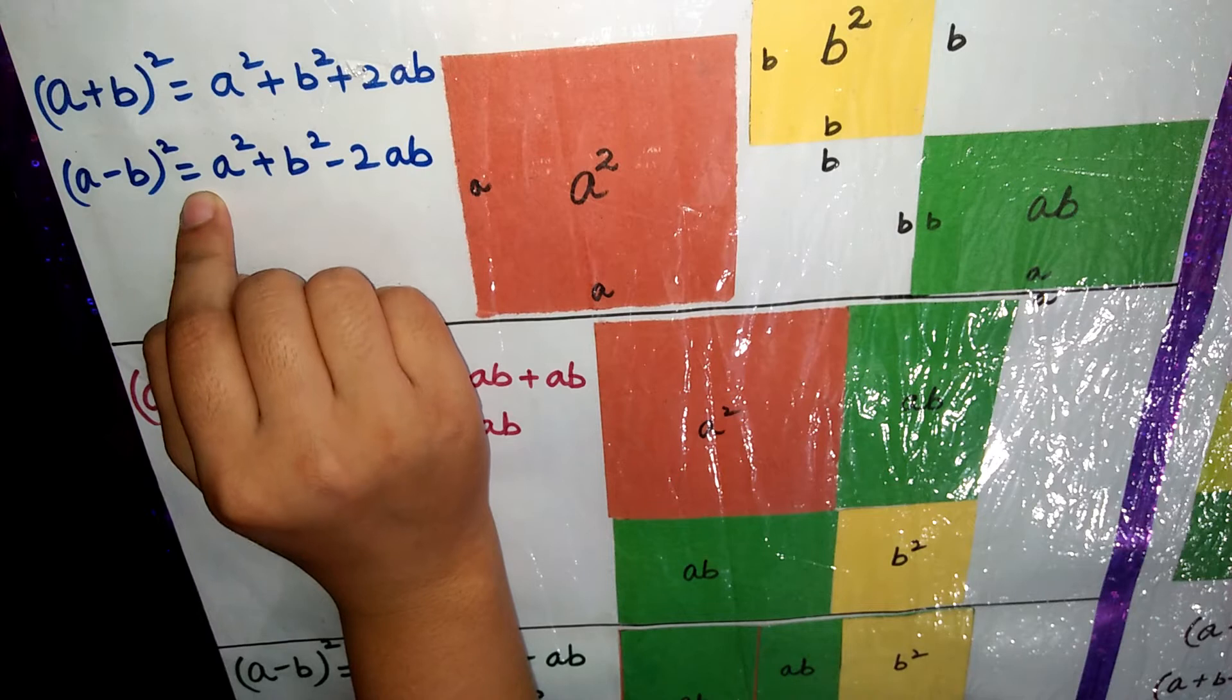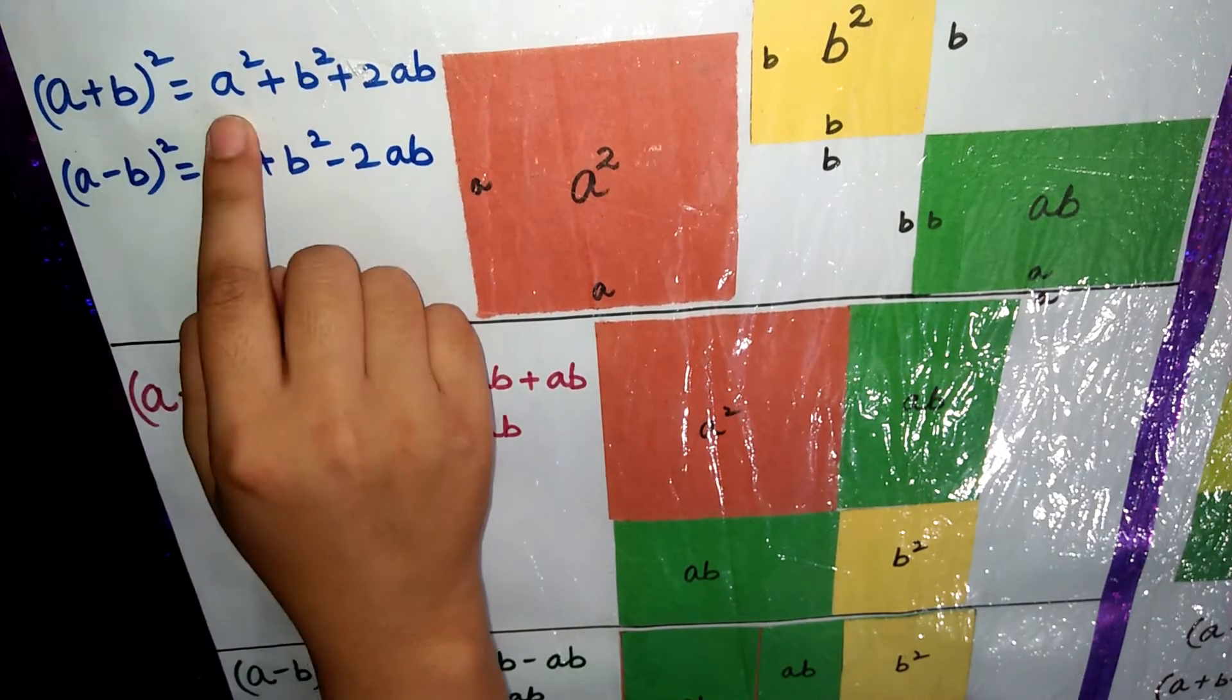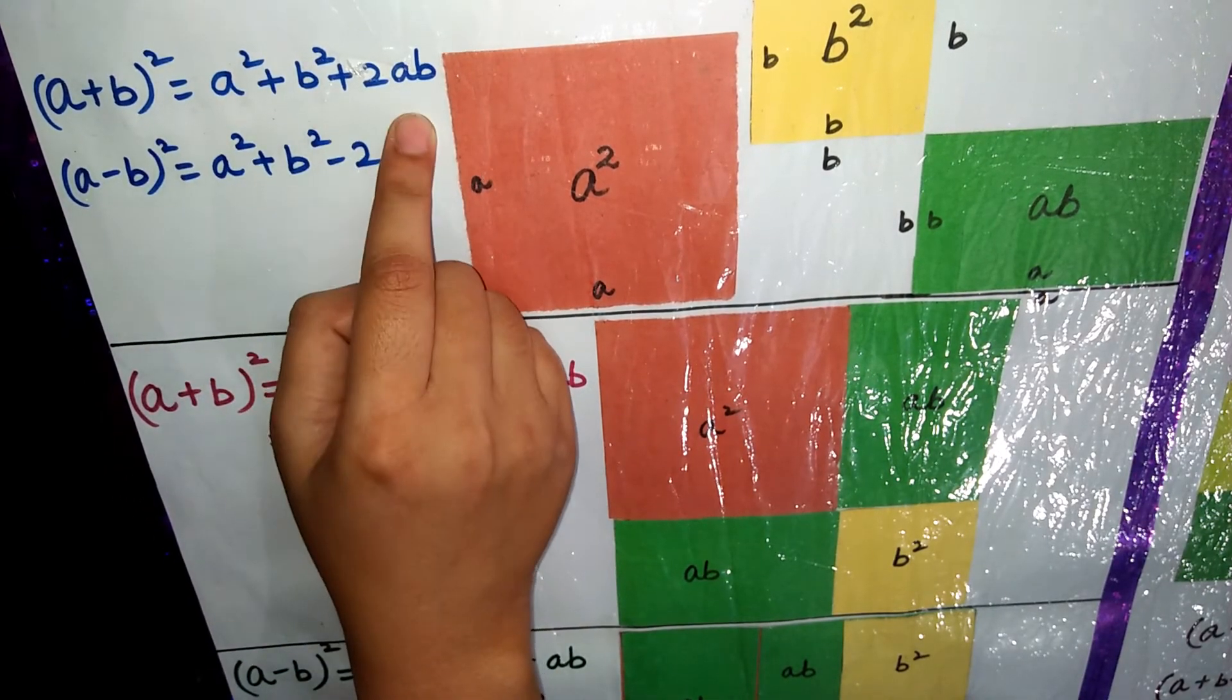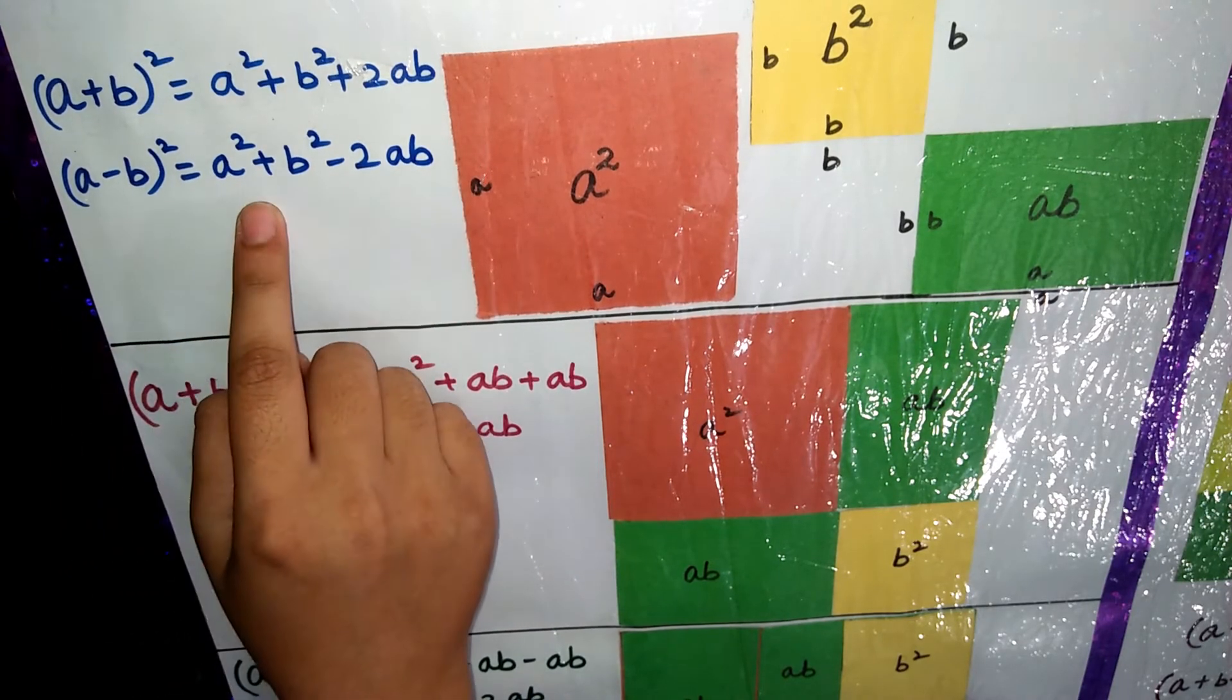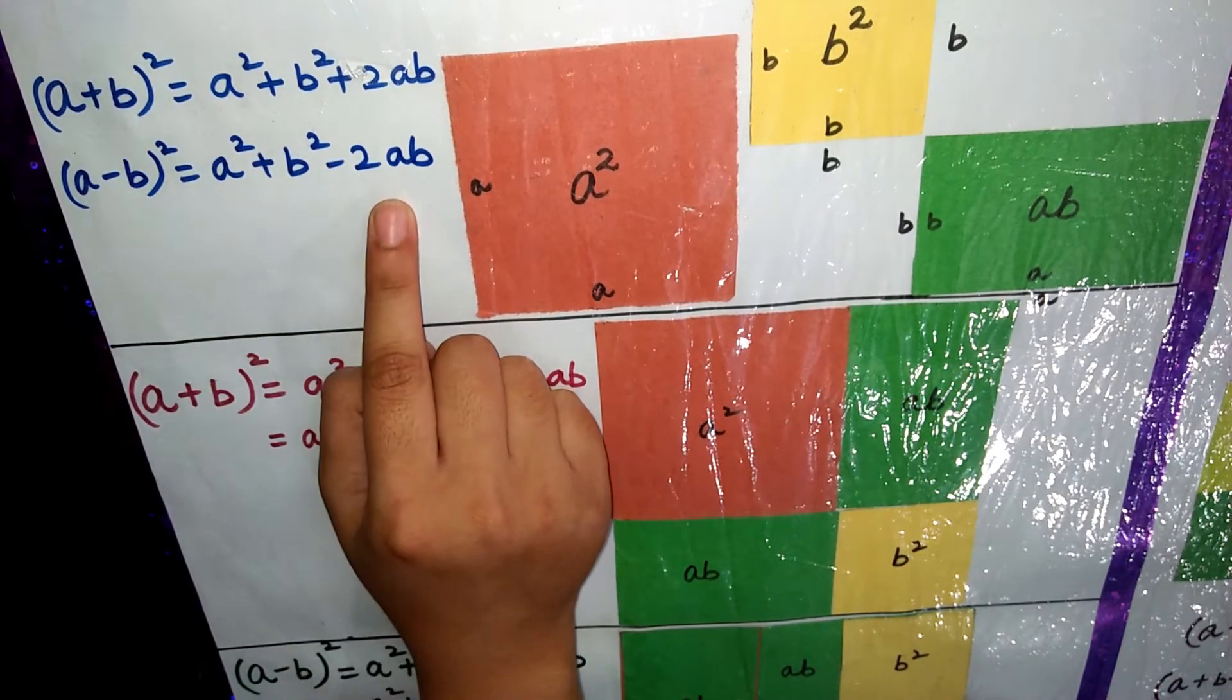We will prove two identities: a plus b whole square equals to a square plus b square plus 2ab, and a minus b whole square equals to a square plus b square minus 2ab.